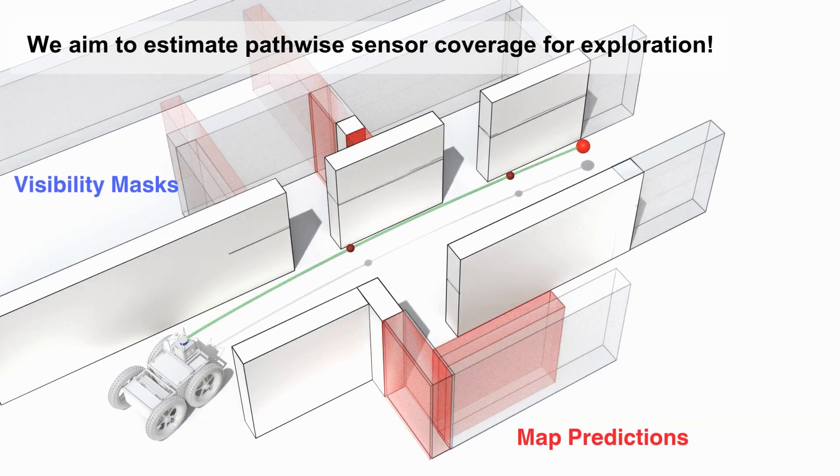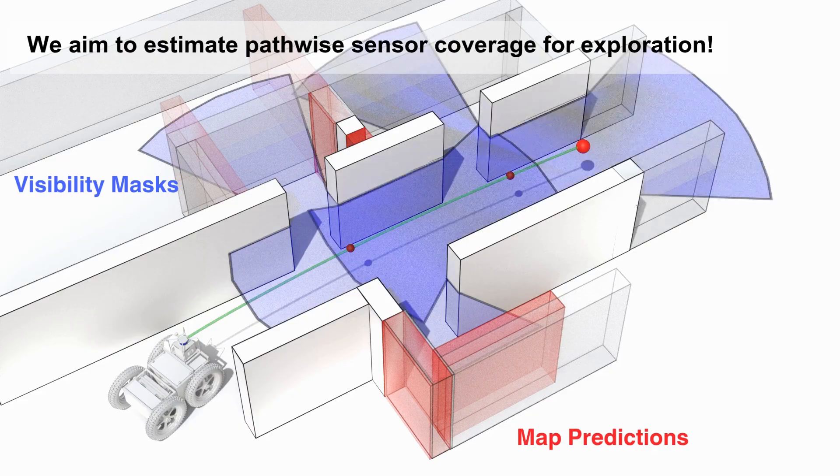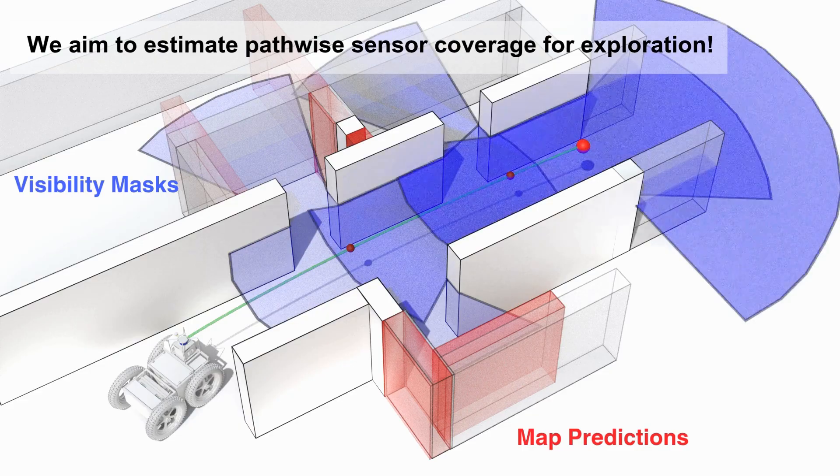The robot generates map predictions, generates visibility masks from the points along the path to the frontier, and combines the pathwise sensor coverage for information gain.